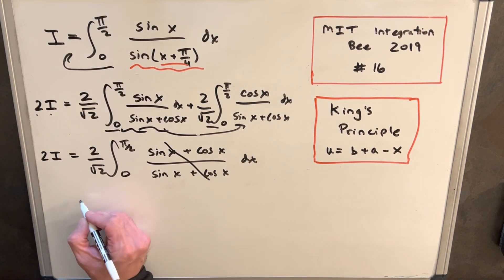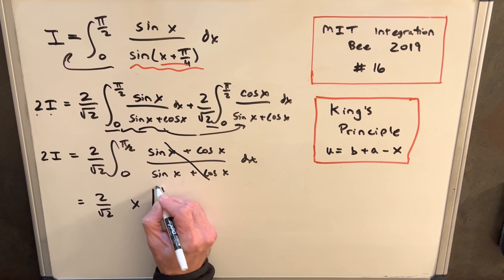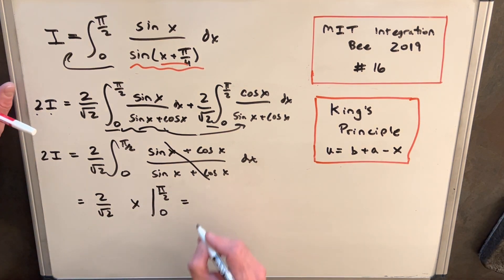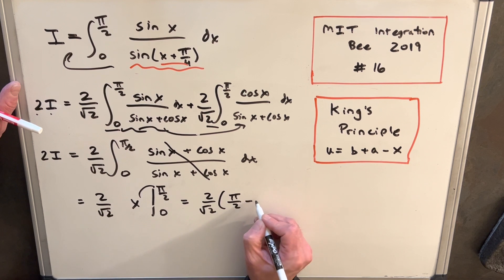And so now we're integrating one, so we're going to have 2 square root of 2. Integral of one is x evaluated from pi over 2 to 0. And this is just going to be 2 square root of 2. And we're going to have, when we plug our limits in, we're going to have pi over 2 minus 0.